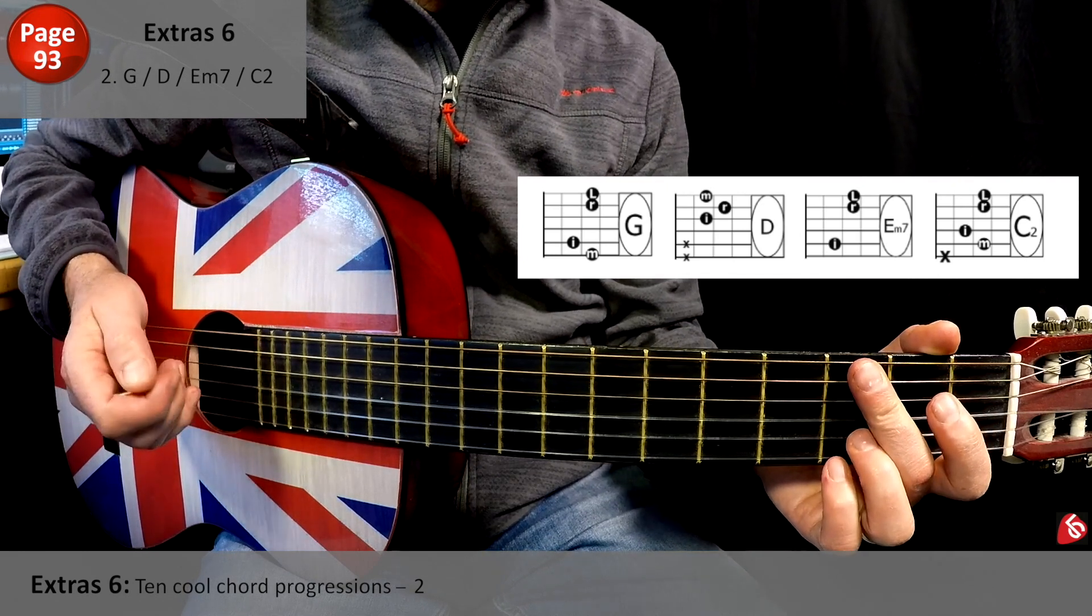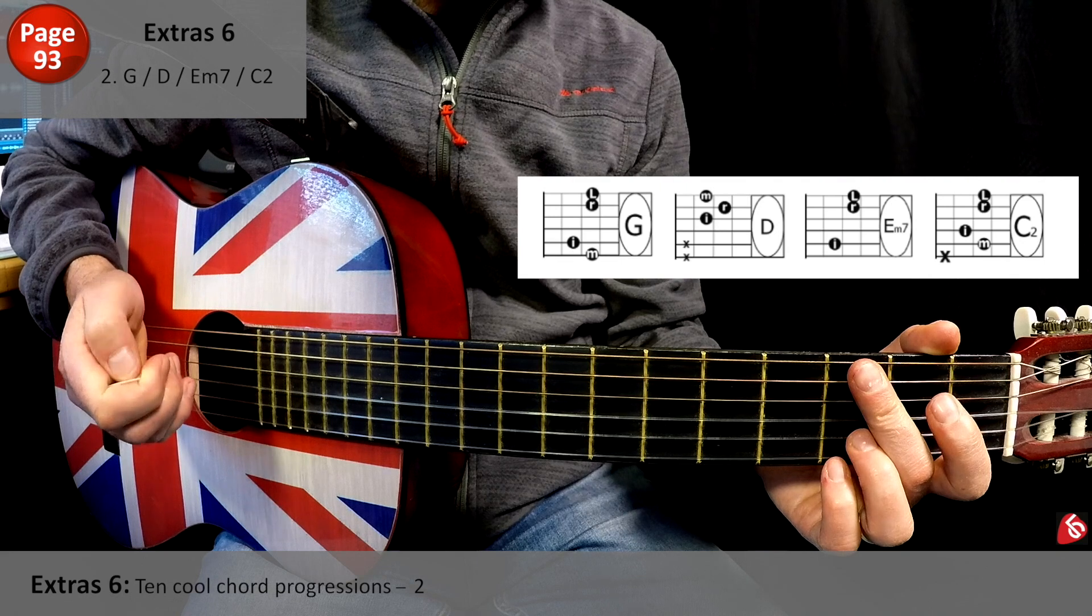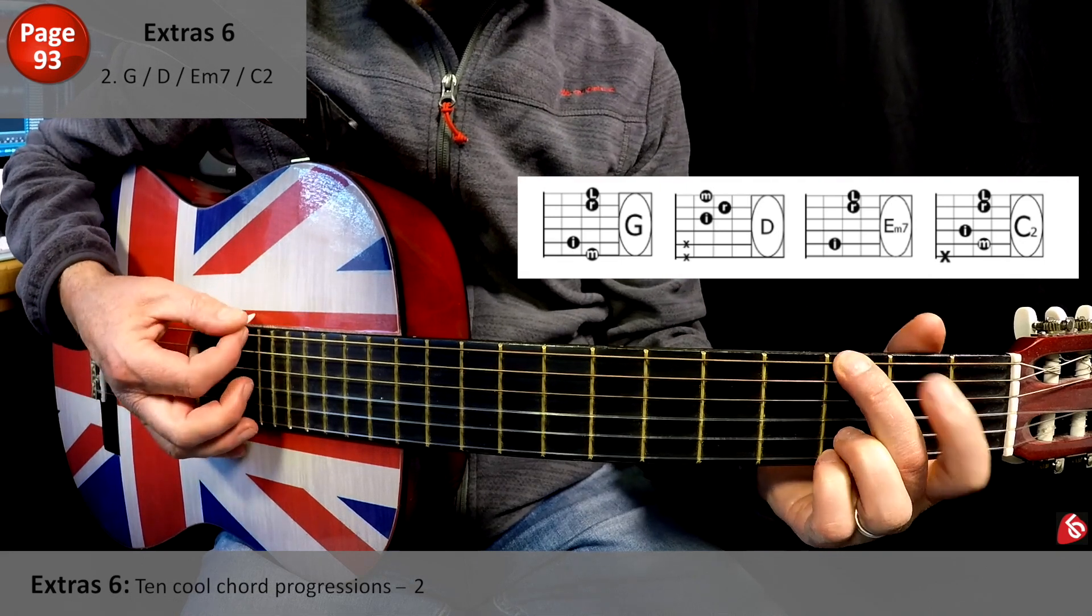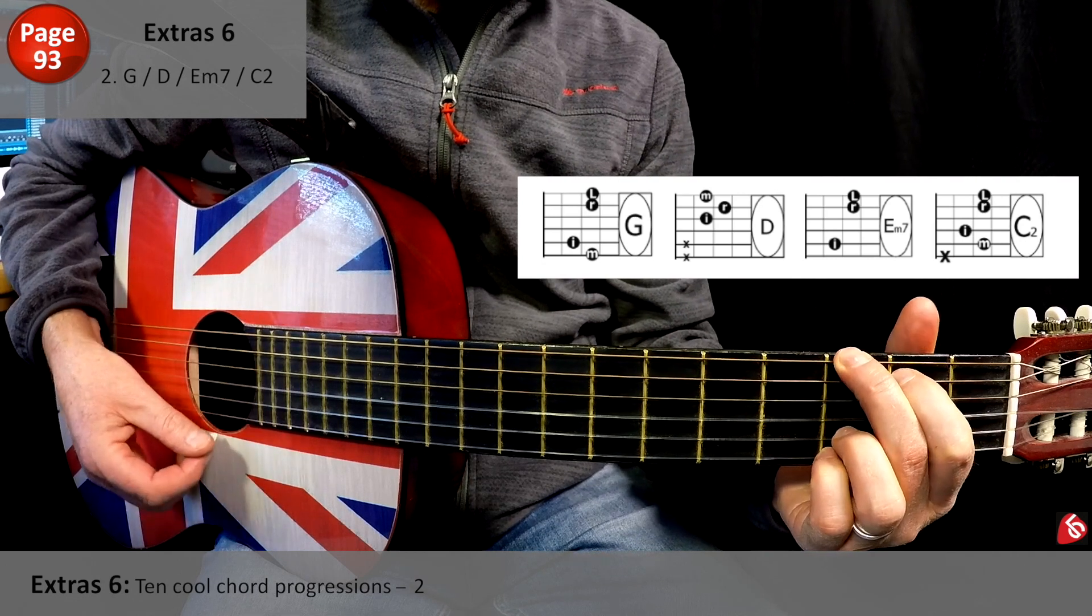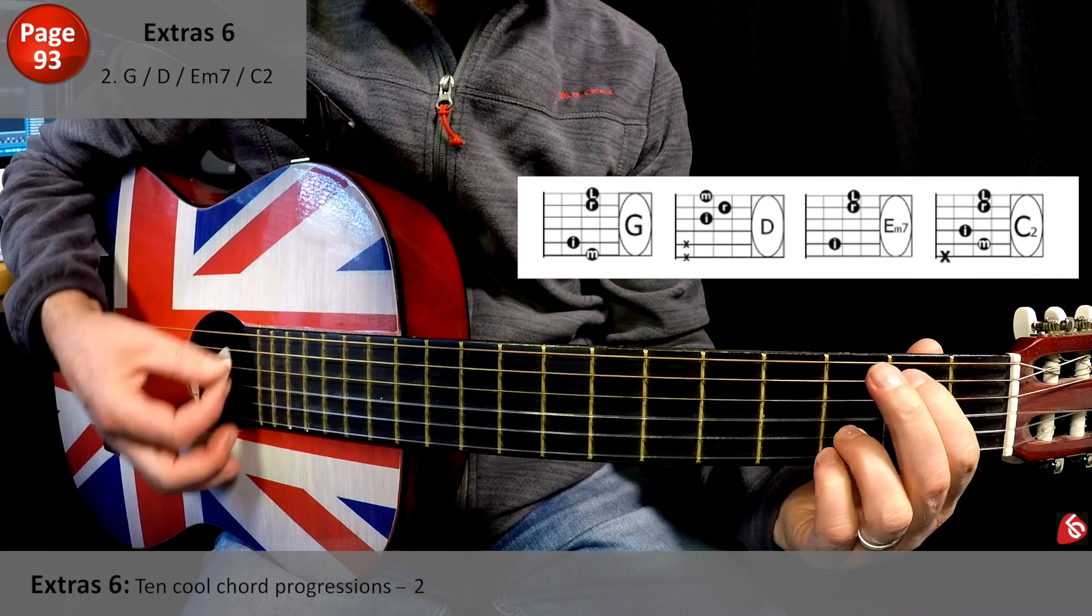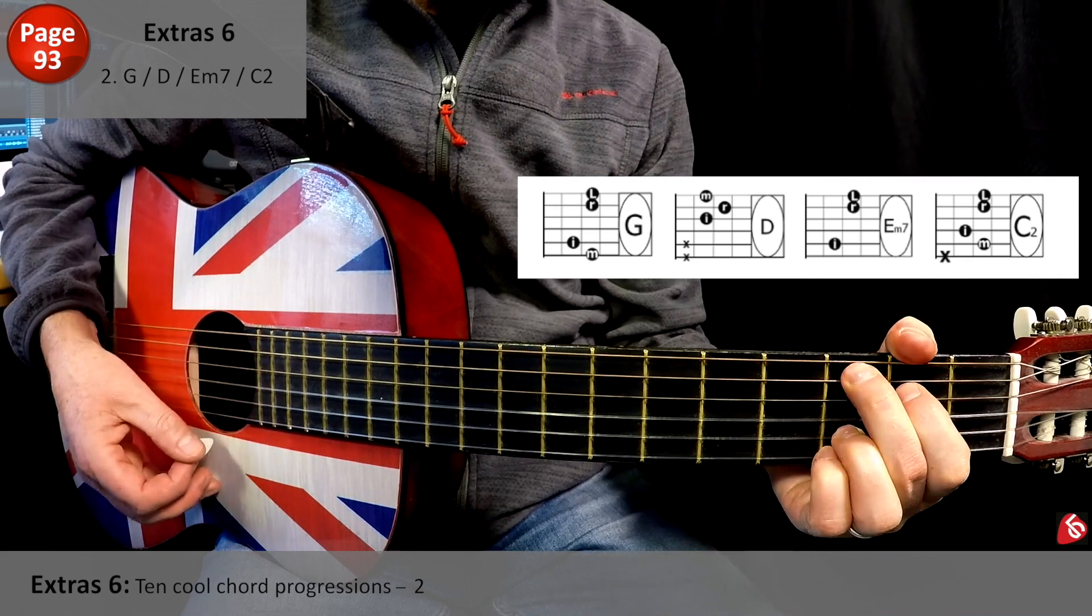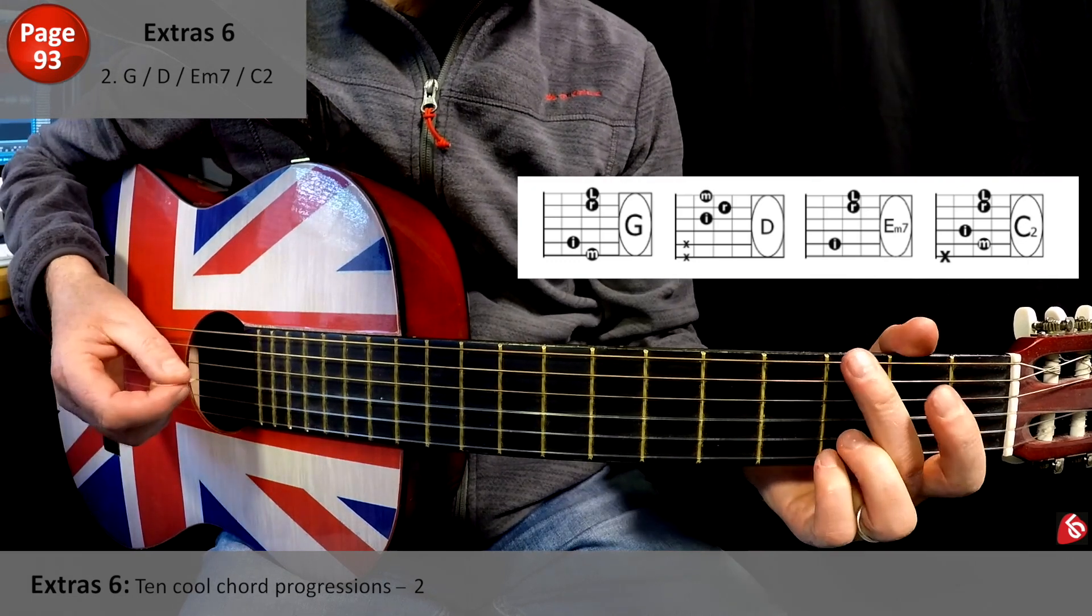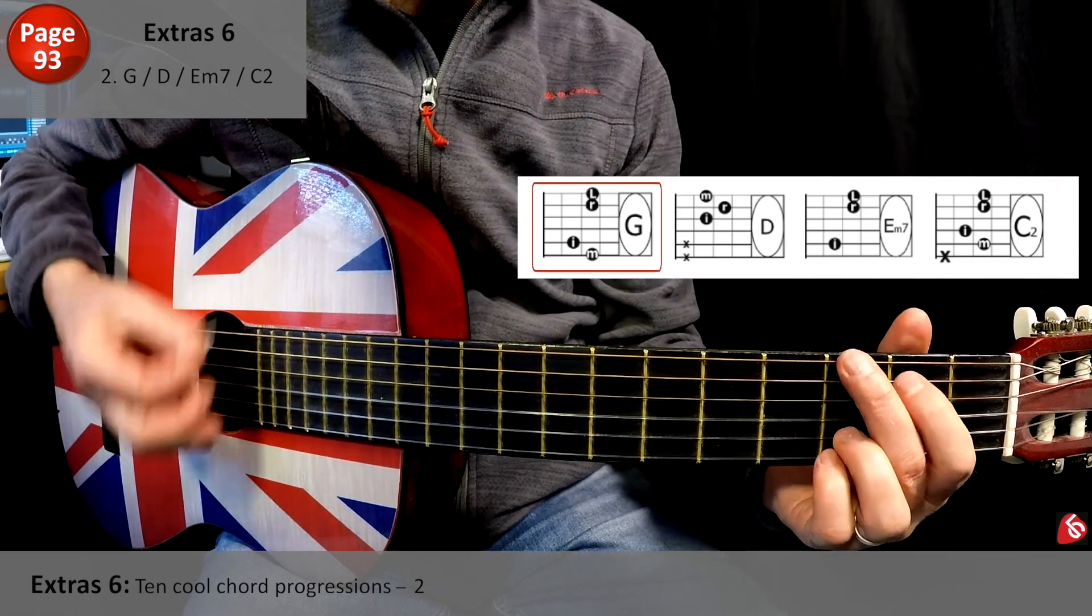Again, you could play this all the way through a million times. Just a really great chord sequence. So it's going to be G, D, E minor 7, C2. And we're hoping that one day it's going to sound like this. I'm going to use the strumming pattern 1, 2, and 3, and 4.